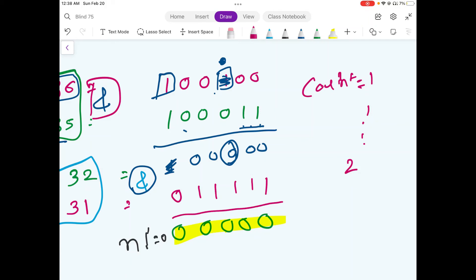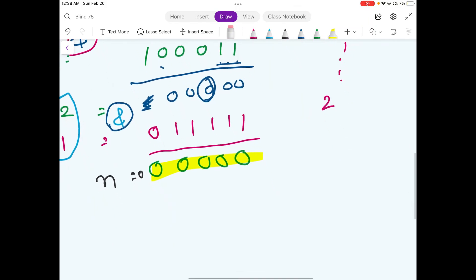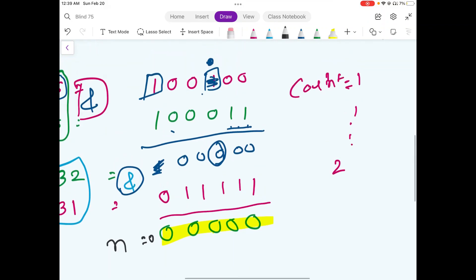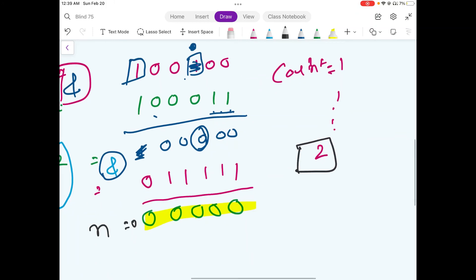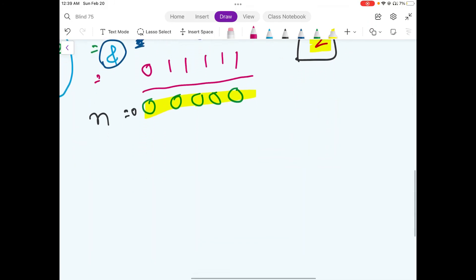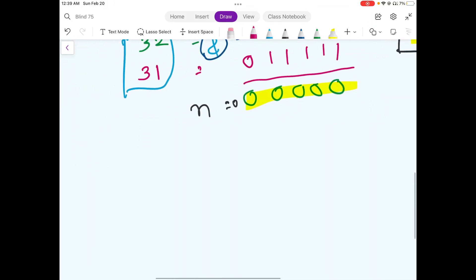And after that, we found that the value of n is actually equal to 0. So, we can simply break out of the loop and when we break out of the loop, we would return whatever the value of count we had found. And in this case, the value of count we found is actually 2. And this solution would work perfectly fine and this would be our optimal solution.